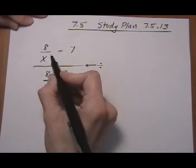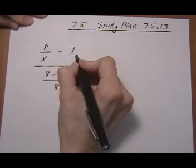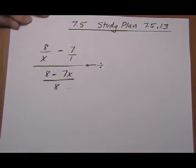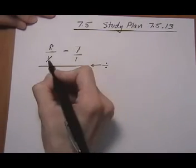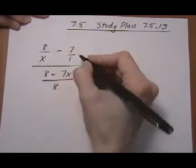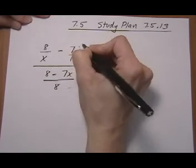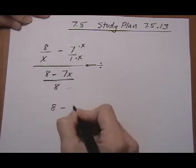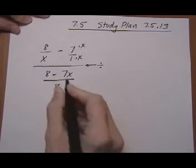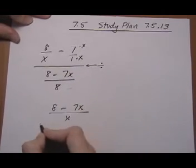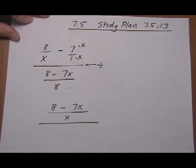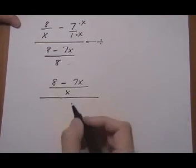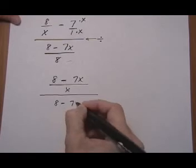So this one up here, we're going to turn into one fraction by thinking of this as 7 over 1. Then the common denominator will be x, so we need to multiply by x top and bottom. That gives us 8 minus 7x all over x. The bottom fraction we just leave as it is.